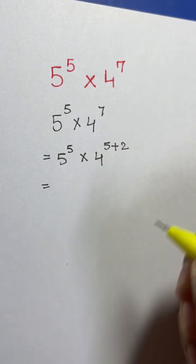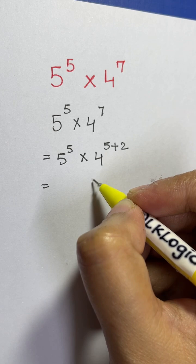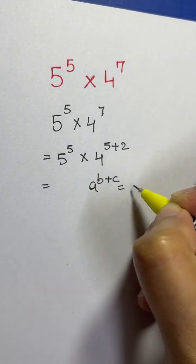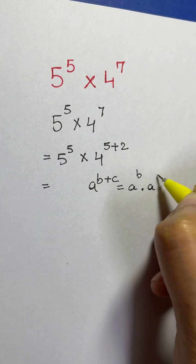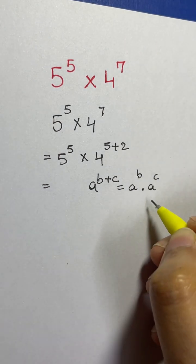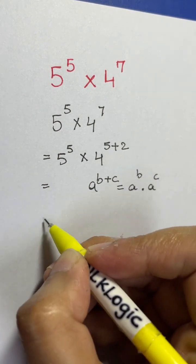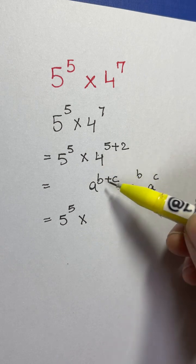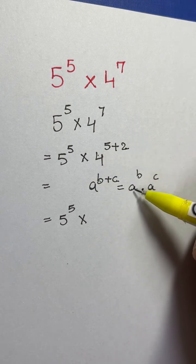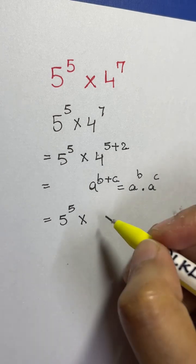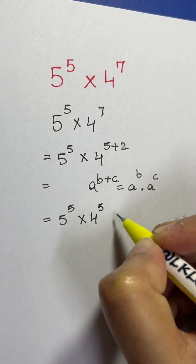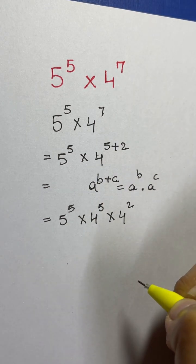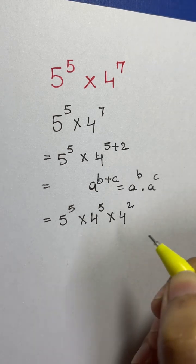Now 4^(5+2) uses the exponent law: a to the power of (b+c) equals a^b times a^c. So we write: 5 to the power of 5 times 4 to the power of 5 times 4 to the power of 2.